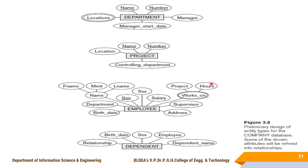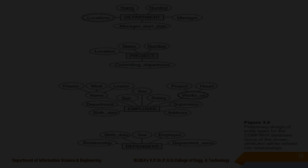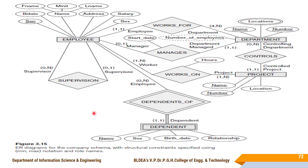So this is the example for composite attributes. These are the preliminary designs of the entity types — representing the entity types and what attributes belong to each entity type for the company database. Next we will see the full ER diagram for the company database.